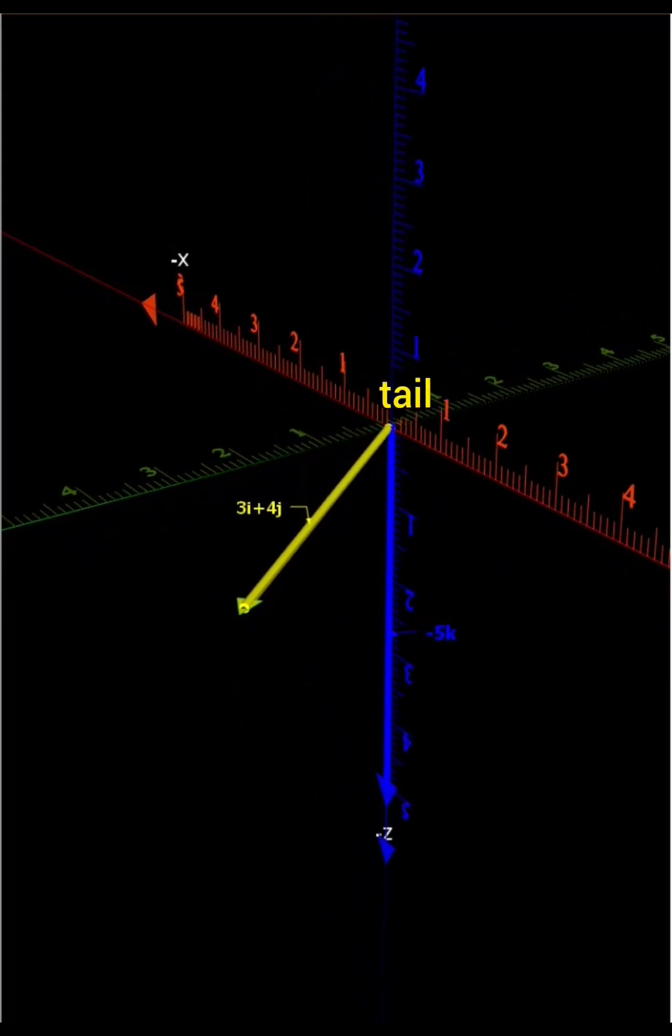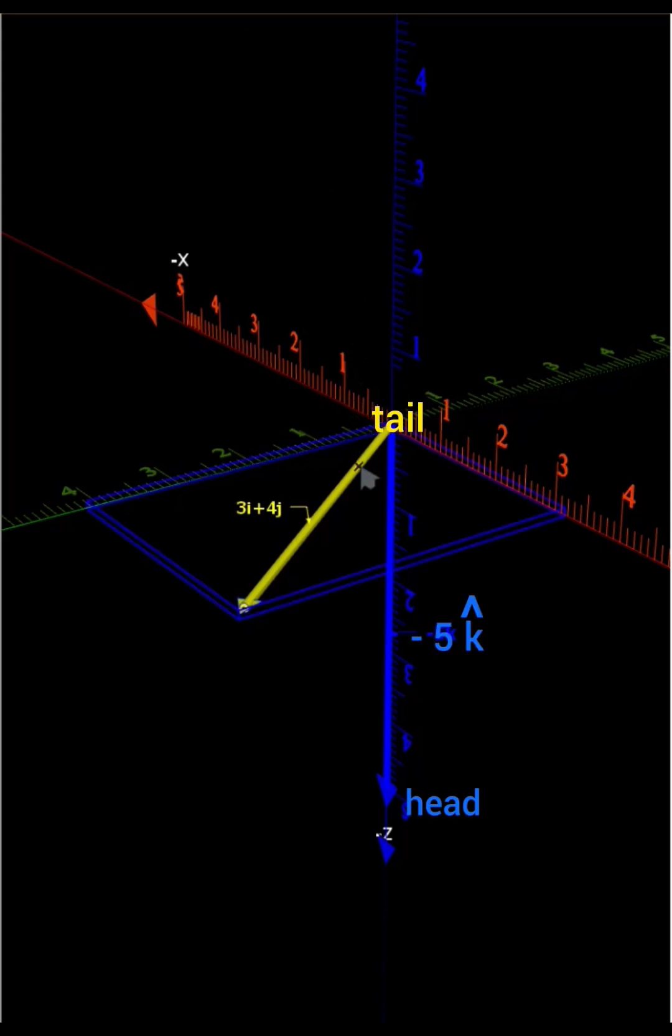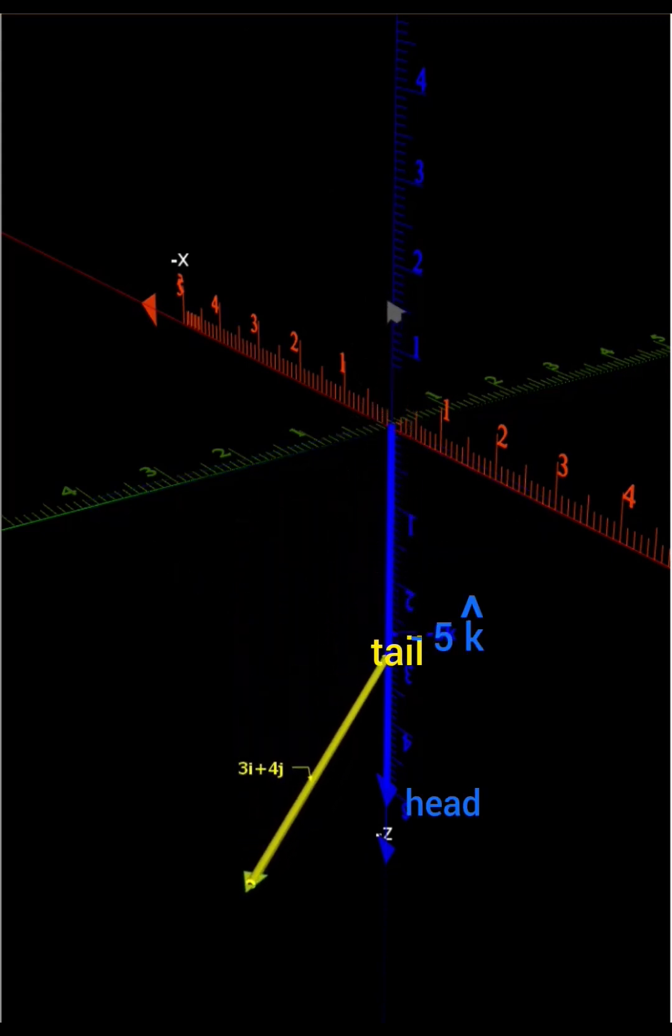Now, the vector 3i cap plus 4j cap is displaced parallel to itself such that its tail coincides with the head of vector minus 5k cap.